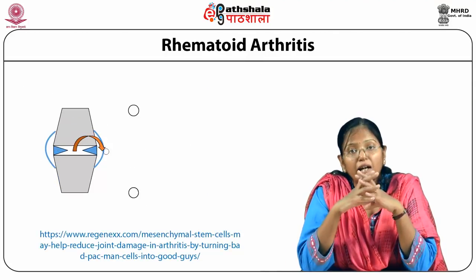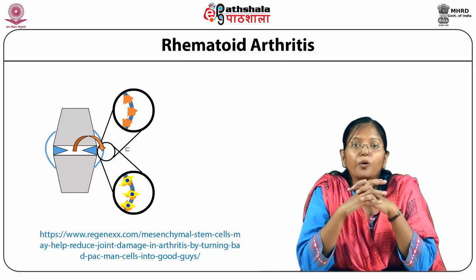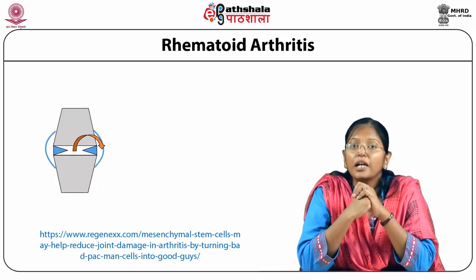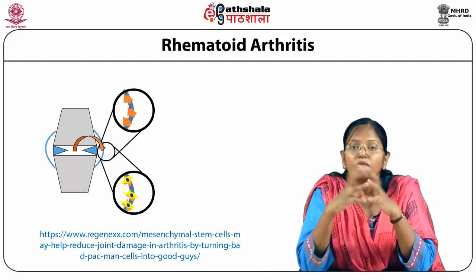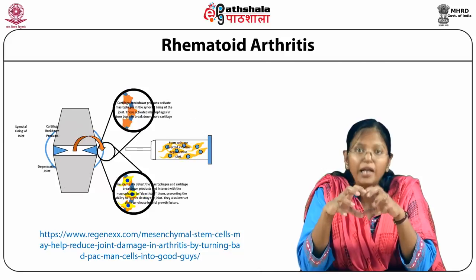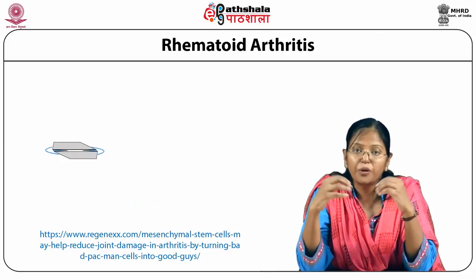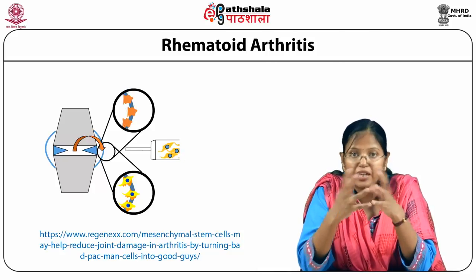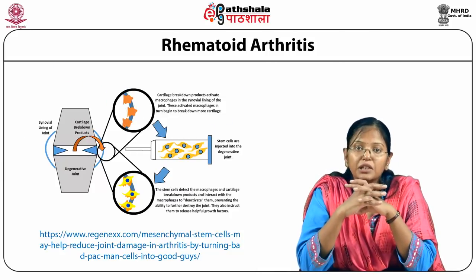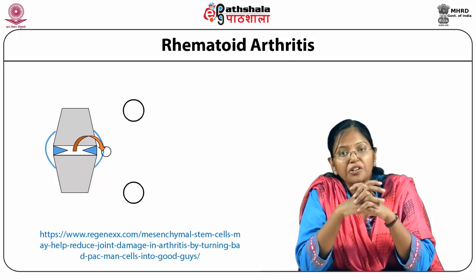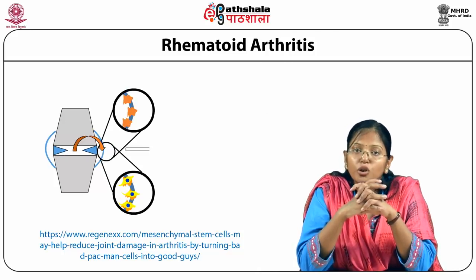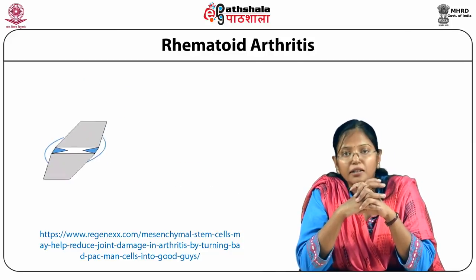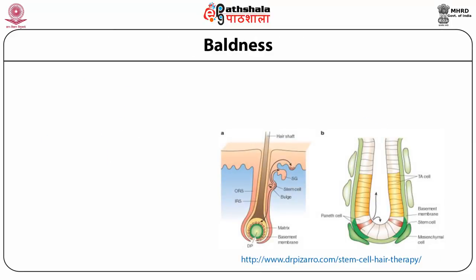Rheumatoid arthritis is a very big problem in elderly and some adult patients. Here, the synovial fluid inside joints and the joints between bones get distorted or defective. With the help of stem cells, these can be rejuvenated and treated — stem cells can cure the pain and injury of rheumatoid arthritis patients.